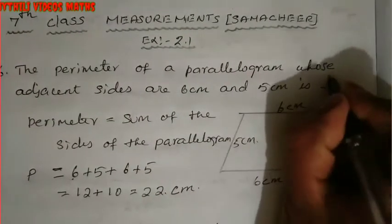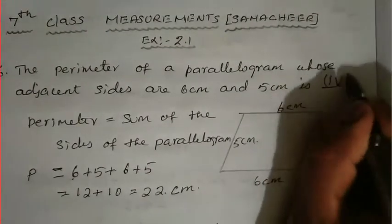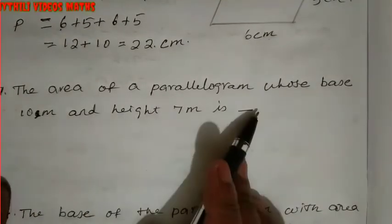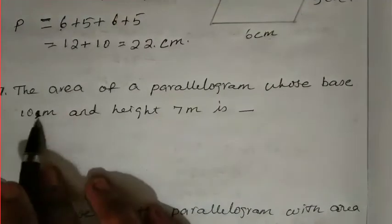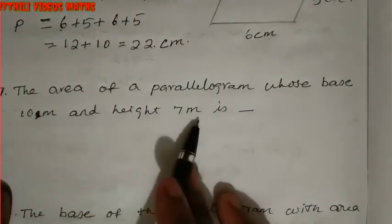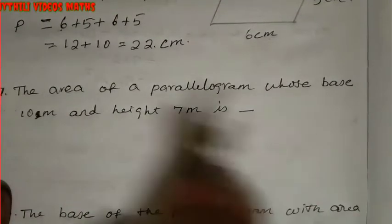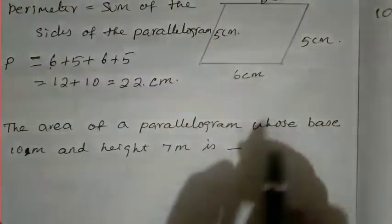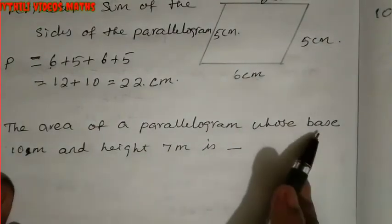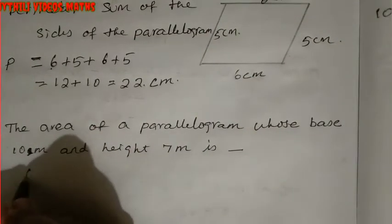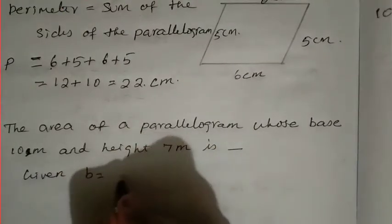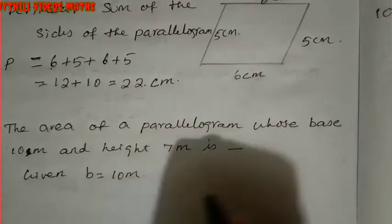The answer is the fourth option - fourth Roman numeral. Now the seventh sum: the area of a parallelogram whose base is 10 meters and height is 7 meters. We need to find the area. First write what is given. Base b = 10 meters.